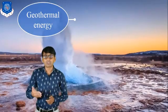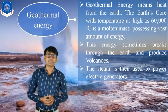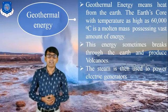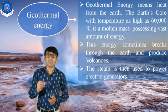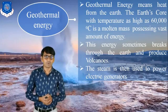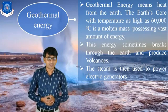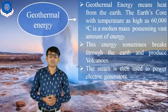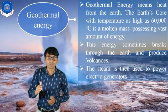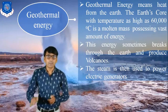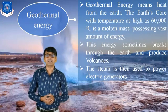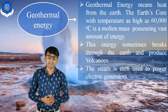Now the fourth one is Geothermal energy. Geothermal energy means heat from the earth. The earth's core, with a temperature as high as 60,000 degrees Celsius, is a molten mass containing a very large amount of energy. This energy sometimes breaks through the earth and produces volcanoes. In a geothermal power plant, high-temperature gas present below the earth's surface is used to generate steam, and that steam is used to generate electricity.